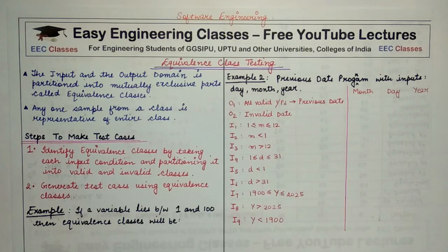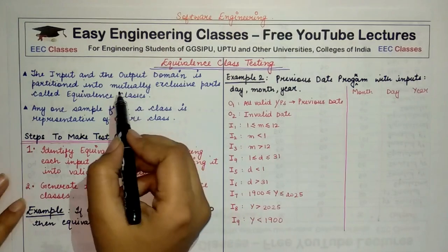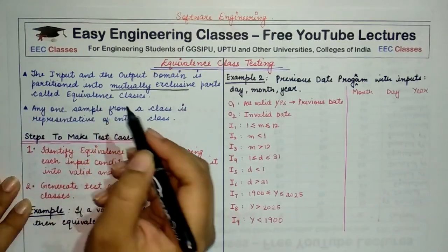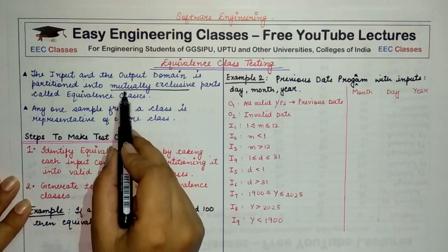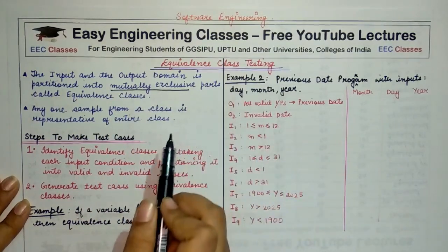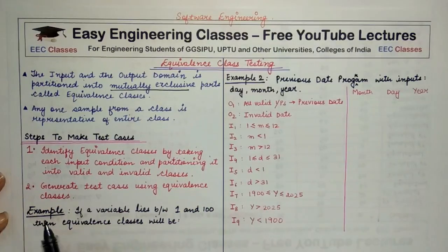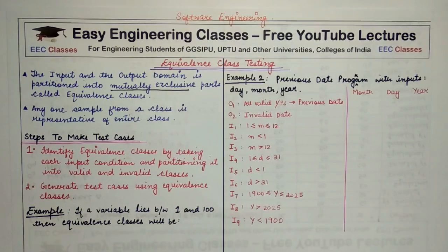So equivalence class testing means: depending upon your input conditions and output conditions, you partition your domain into mutually exclusive parts. We call these equivalence classes, and from these equivalence classes we derive our test cases. We can say that a class is valid when the values lying within a class are of one kind and are different from the values lying in another class.